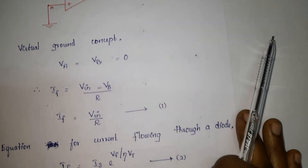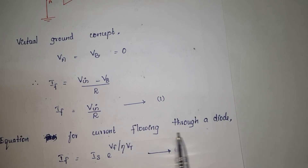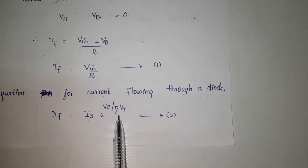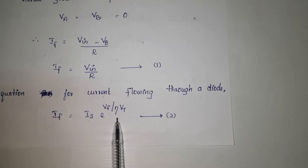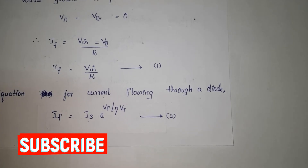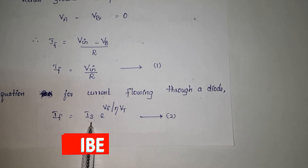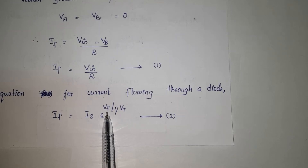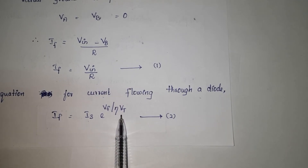Next, the equation for current flowing through a diode is IF = IS · e^(VF / η·VT). This is the equation for diode current in forward bias, where IS is the saturation current, VF is the voltage drop across the diode in forward bias, and VT is the diode's thermal equivalent voltage.